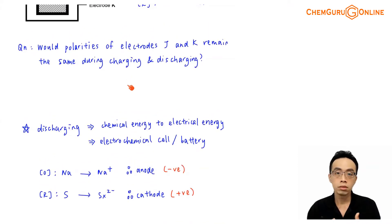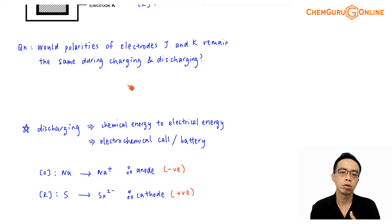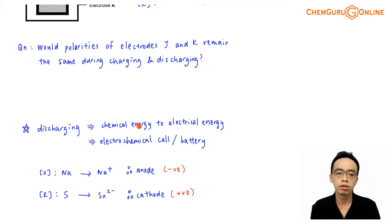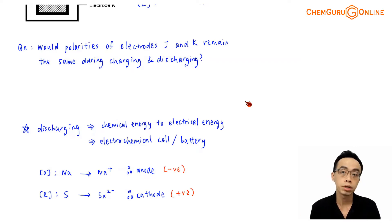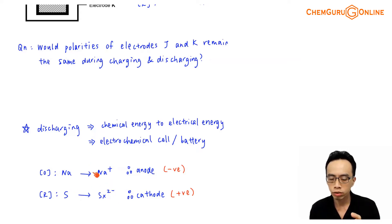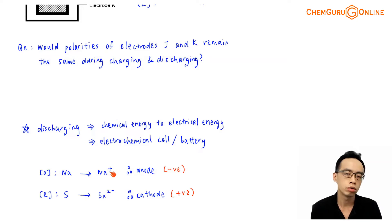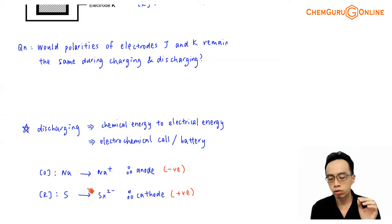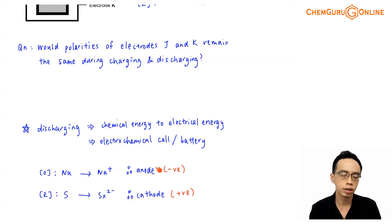Let's consider discharging first. During discharging, you are using the battery as it is. There is stored chemical energy inside the battery; a reaction takes place in the electrochemical cell, generating a flow of electrons — that is, generating electricity. So in terms of energy conversion, this is chemical energy to electrical energy. During discharging, sodium is oxidized and sulfur is reduced. So electrode J, which is directly in contact with sodium, will be the anode because oxidation occurs there, and electrode K, in contact with sulfur which is reduced, will be the cathode.